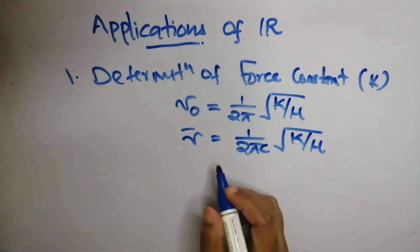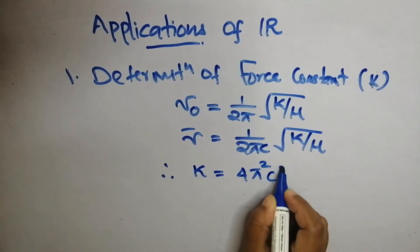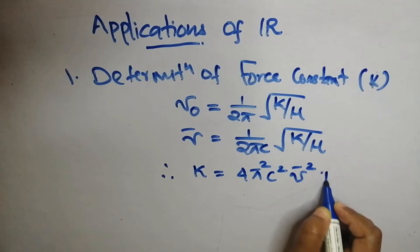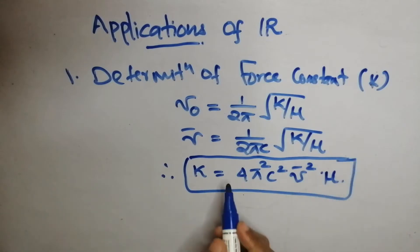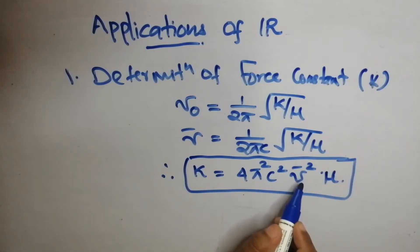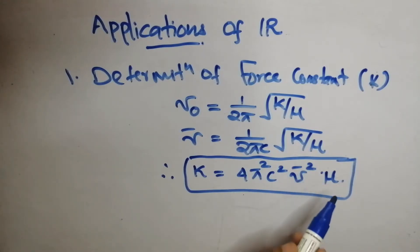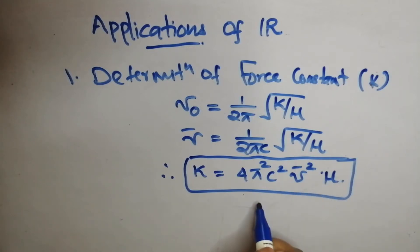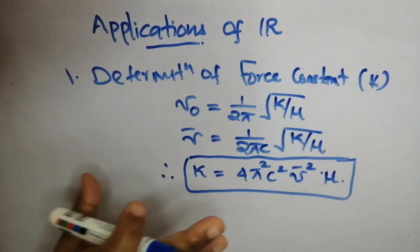Rearranging for K, we get: K equals 4 pi squared c squared mu-bar squared into mu. Here, K is the force constant, c is the speed of light (3 × 10⁸ m/s), Nu-bar is the wavenumber, and mu is the reduced mass, where mu equals m1 times m2 divided by m1 plus m2. Using this equation, we can determine the force constant.